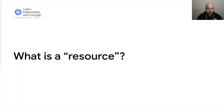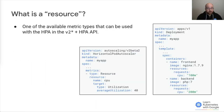So to begin, what is a resource? Or more specifically, what is a resource with regard to the horizontal pod autoscaler? A resource is one of the available metric types that can be used with the horizontal pod autoscaler, or HPA, in the v2 versions of the API — specifically v2 beta 1 and v2 beta 2.